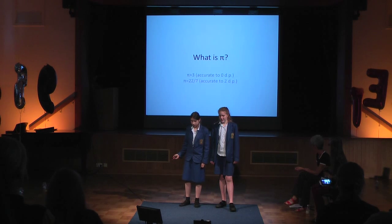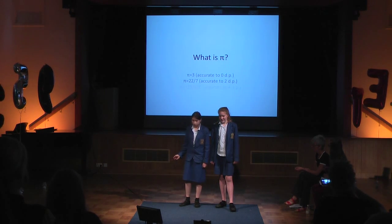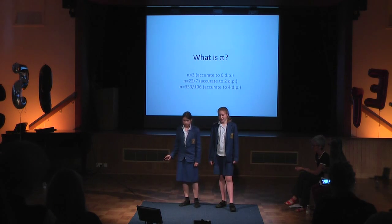3 is pi without the decimals. 22 over 7 is 3.14. 333 over 106 is 3.1415. 355 over 113 is 3.141592. And the most accurate, 103,993 over 33,102 is 3.141592653.